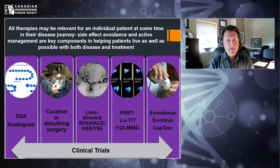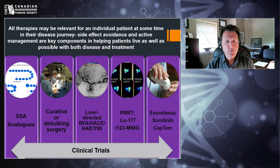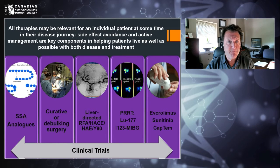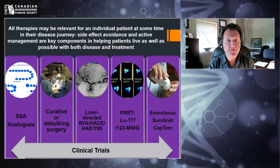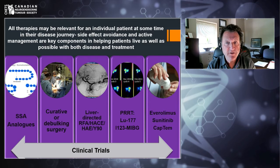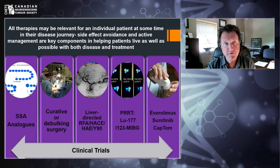So in this talk I've spoken about the first group of treatments — SSA analogs — and the targeted and chemotherapy treatments: Everolimus, Sunitinib, and CAPTEM. Many patients will also have multiple surgeries, liver-directed therapies, and PRRT, all of which may be relevant at some time in their disease journey. Side effect avoidance and active management are key components in helping you live as well as possible with your disease and treatment. I think it's something to be very involved with — engage with your oncologist, GP, or nurse practitioner to make sure things go as well as possible for you. Thank you very much, and I hope this has been helpful.